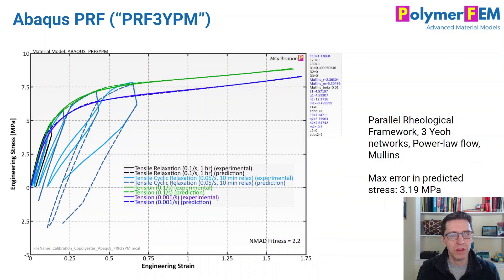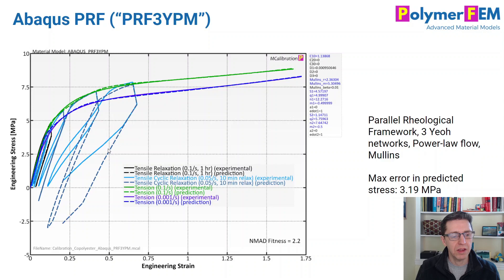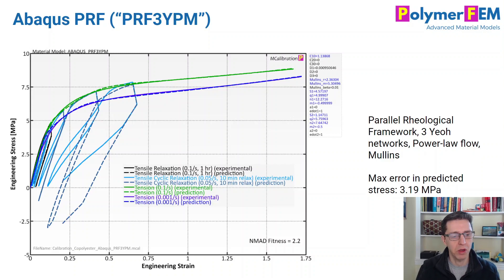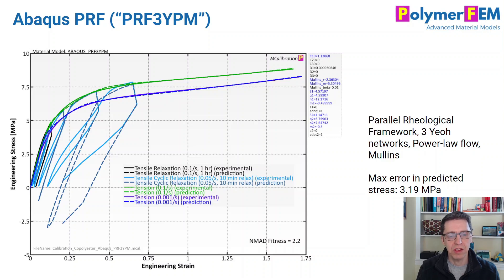How about the three-network PRF model with power law flow and Mullins damage? The NMAD fitness is 2.2%, which normally sounds great, but look at the unloading — the unloading response is quite wrong. The equations in the PRF model don't handle the damage or back stress in a way that matches the data well. The maximum error for this PRF model is 3 MPa — not nearly as good as the TNV model.